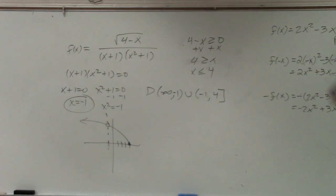And negative 1 is our hole, so it can't include negative 1, so that's why we use parentheses. And 4, there's nothing wrong with it being 4.